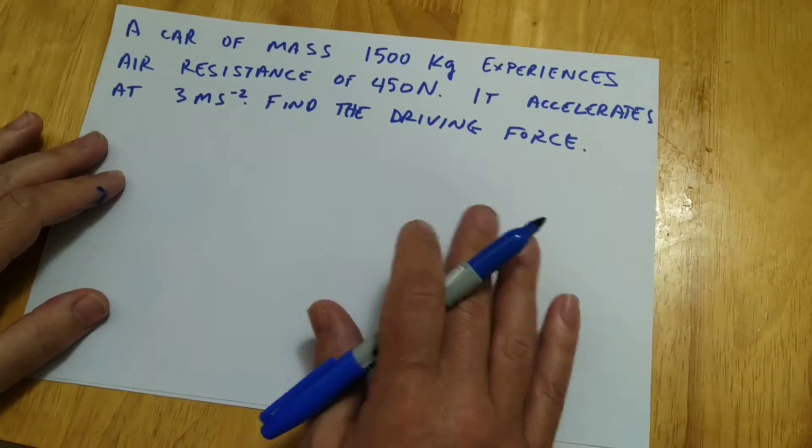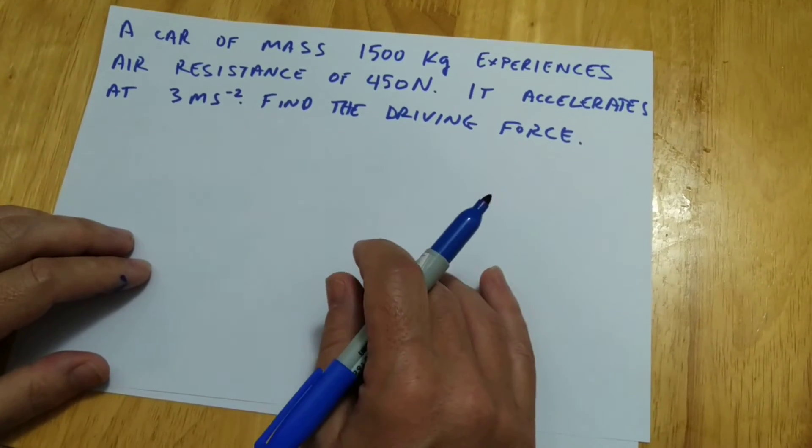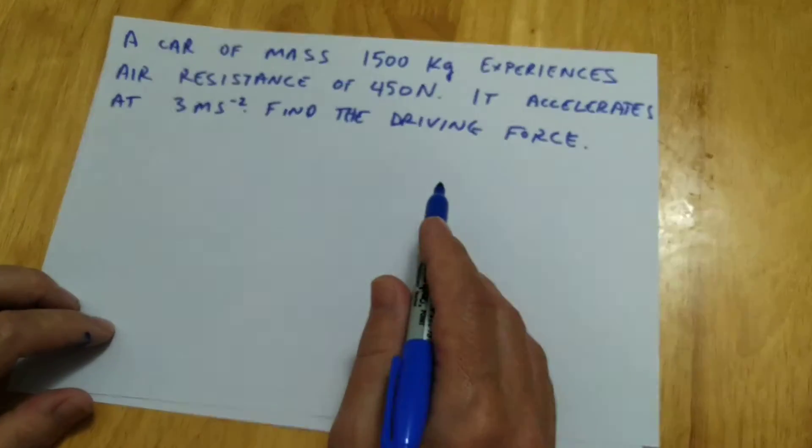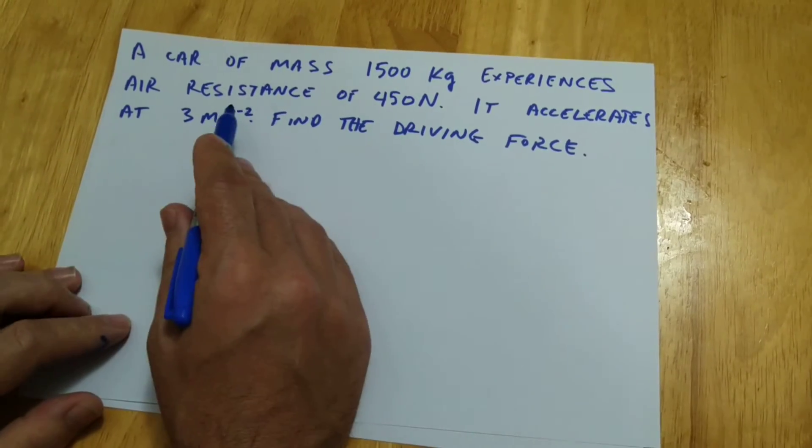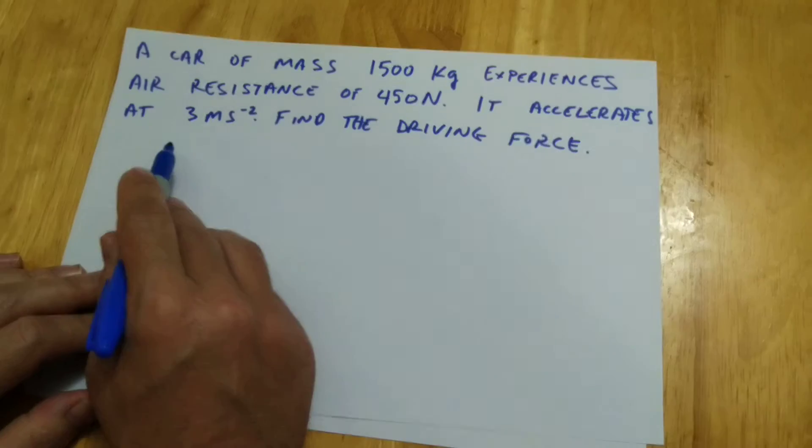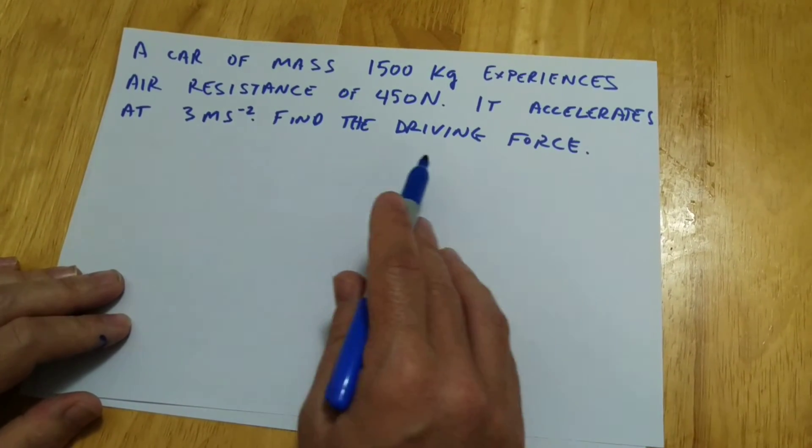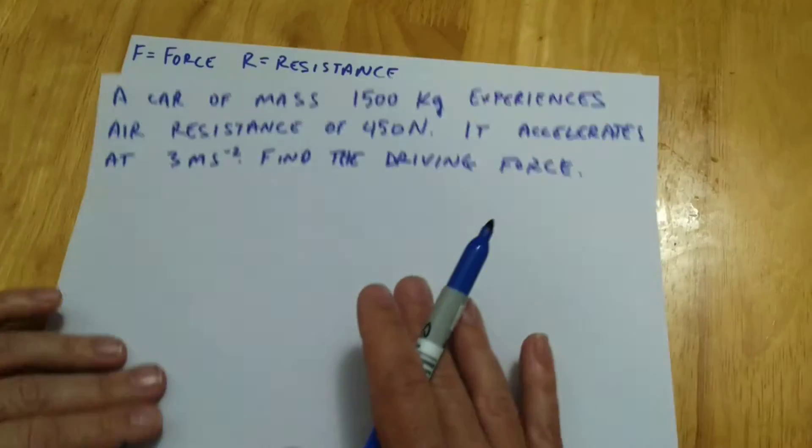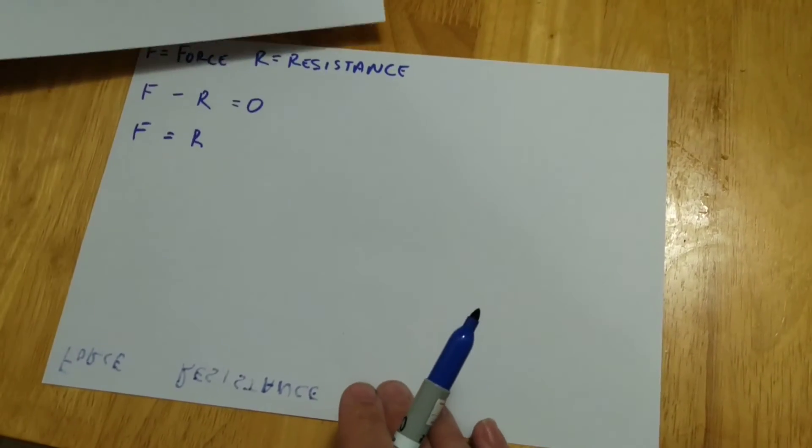So we're going to look at this formula. A car with a mass of 1,500 kg, by the way I got this from your textbook but I just want this for instructional purposes, experiences air resistance, so that's going to be R, your resistance, of 450 newtons. It accelerates at 3 meters per second squared. Find the driving force. So we're trying to find F, and we're going to subtract R from it.